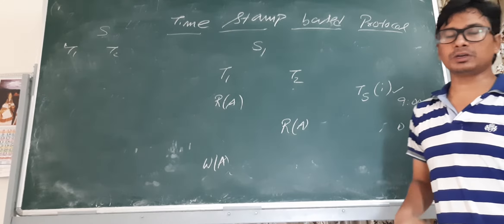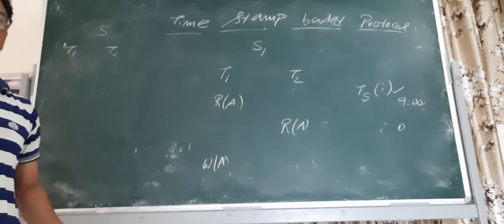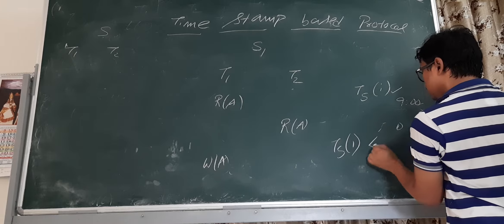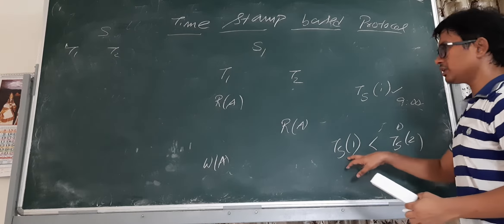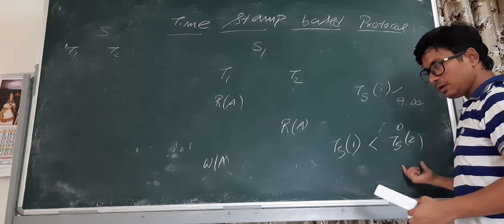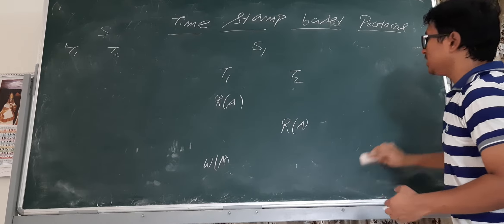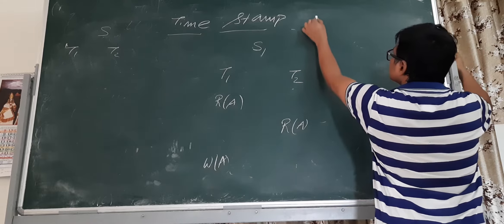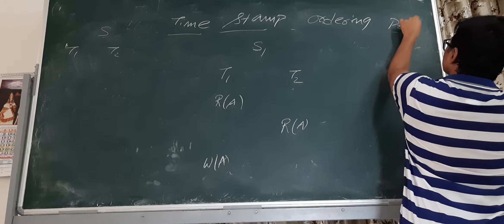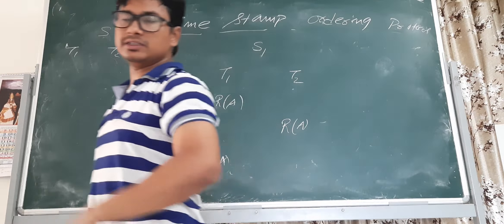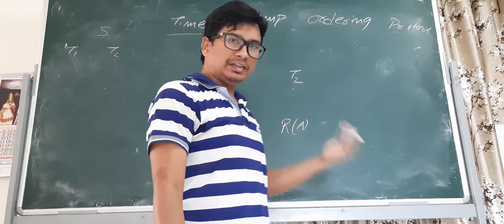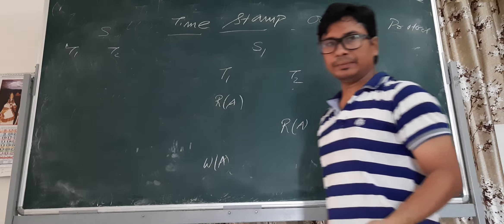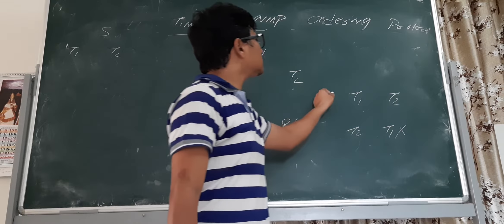Based on the timestamps, we can identify which transaction should execute first. The transaction with the lesser timestamp executes first. So timestamp of T1 is less than timestamp of T2, meaning T1 executes first, then T2. In timestamp-based protocol, any serializable equivalent schedule must always be T1 then T2 — T2 to T1 is not allowed.